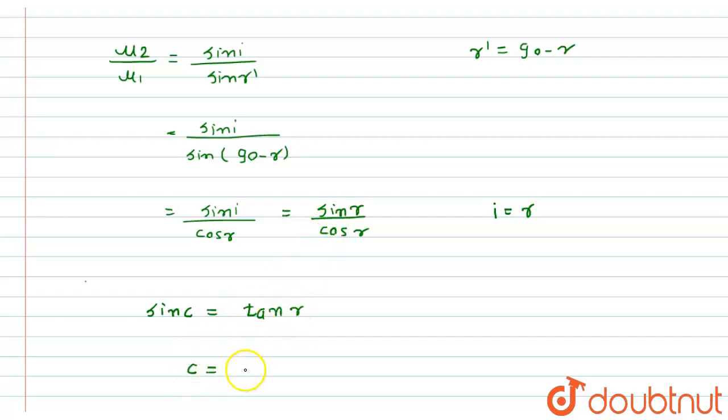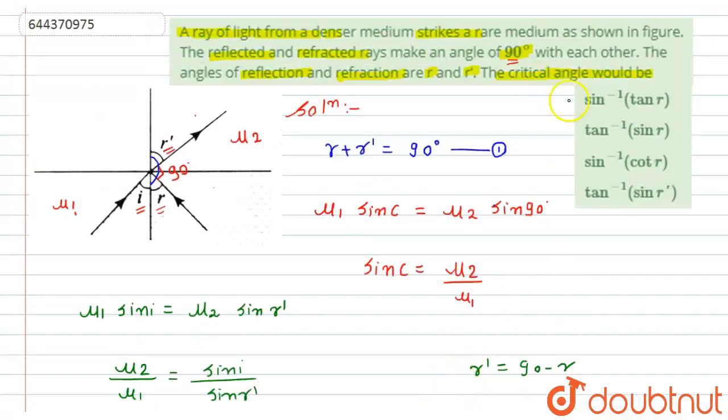So from here the critical angle c will become equals to sin inverse of tan r, and this is what our required answer. The critical angle for the ray, that is c, will be equal to sin inverse of tan r. According to given options, option first will become correct answer for this question. So this is the required solution. I hope you like this solution, thank you.